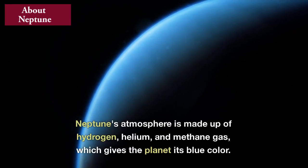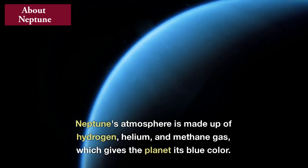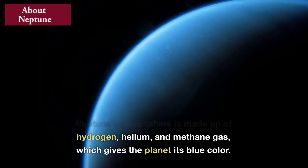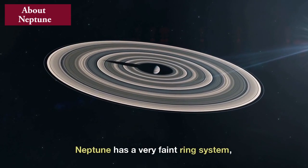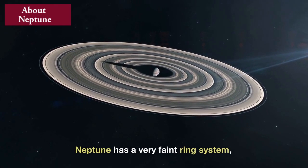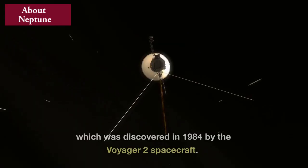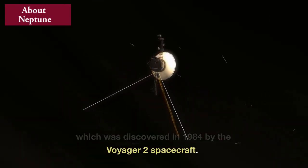Neptune's atmosphere is made up of hydrogen, helium, and methane gas, which gives the planet its blue color. Neptune has a very faint ring system, which was discovered in 1984 by the Voyager 2 spacecraft.